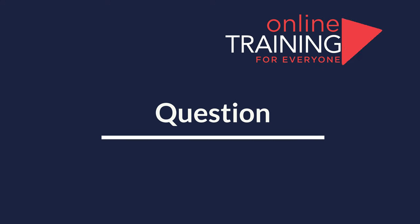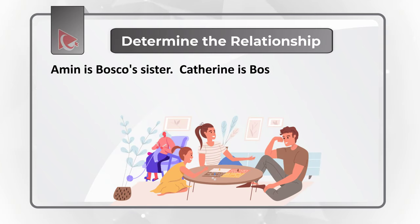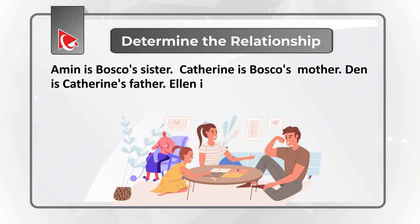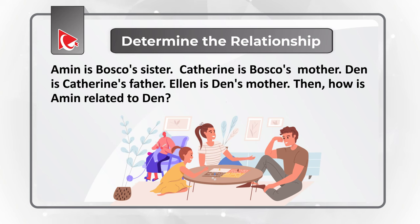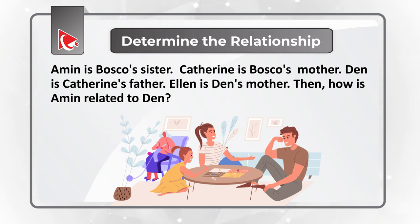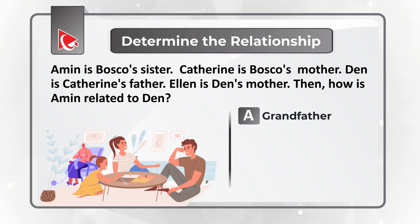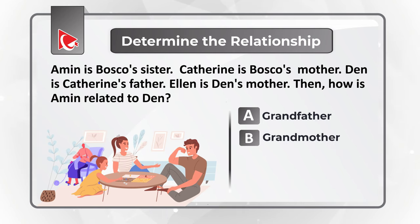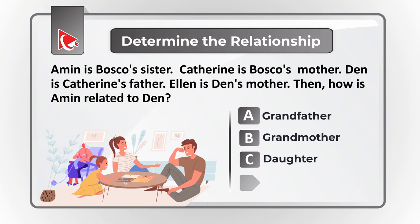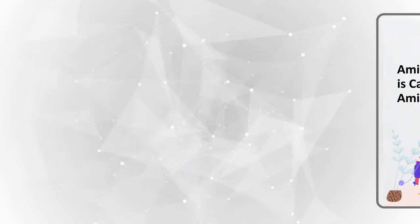Here is an interesting challenge where you need to determine the relationship between family members. Amin is Baska's sister. Catherine is Baska's mother. Dan is Catherine's father. And Alan is Dan's mother. You need to determine how Amin is related to Dan. You have 4 different choices: Choice A, grandfather. Choice B, grandmother. Choice C, daughter. And choice D, granddaughter. Give yourself a little bit of time to navigate this puzzle and get to the correct solution.